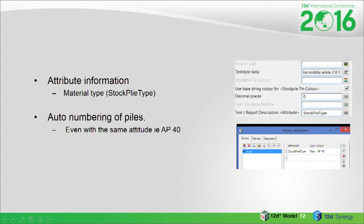Regarding attribute information: with the old stockpile function, if you had a quarry with 30 or 40 stockpiles of the same material, you either had to prefix or postfix the name. If you ran the function and had two piles named AP40, it would crash and you'd have to edit the attributes and rerun everything. The way Peter's got around that is by putting a string number in them, so you can have as many AP40 piles as you want.